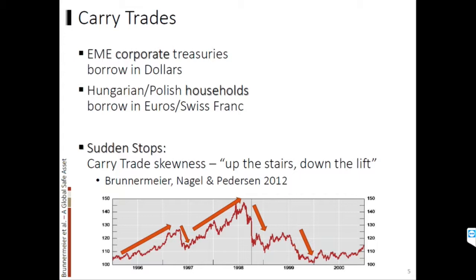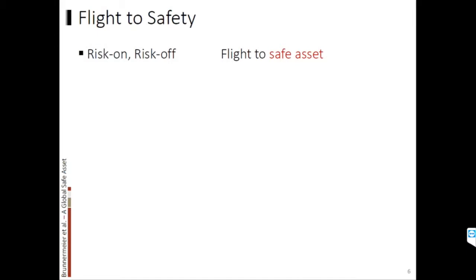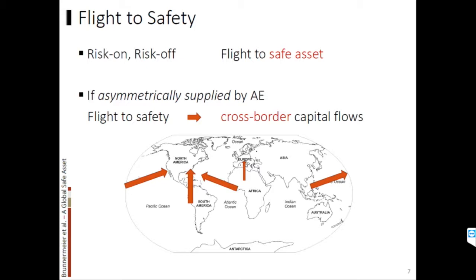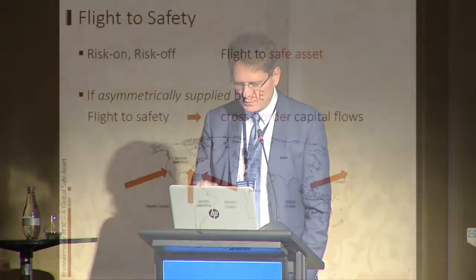The second stylized fact is this flight to safety — there's this risk-on, risk-off mode, and there's a huge flight to safety into safe assets. Because the safe assets are asymmetrically supplied, primarily by the US and to some extent in Europe by Germany and Japan, whenever there is flight to safety it leads to cross-border flows. Given that the safe asset is supplied by few countries which are seen as very sound and safe, the flight to safety actually goes across borders. And that's an issue I would like to address — whether there's a different structure to avoid cross-border flight to safety flows.